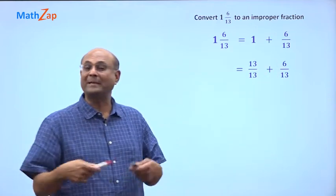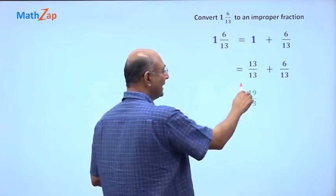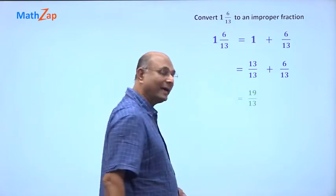So together you have 13 plus 6, which is 19 pieces of 1 by 13. So 19 by 13 is the answer.